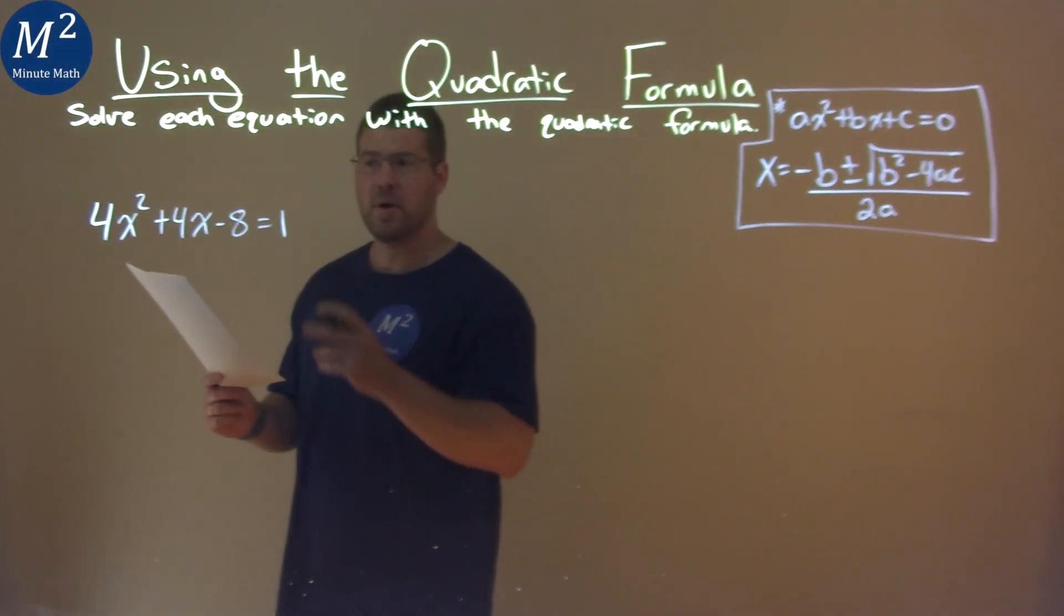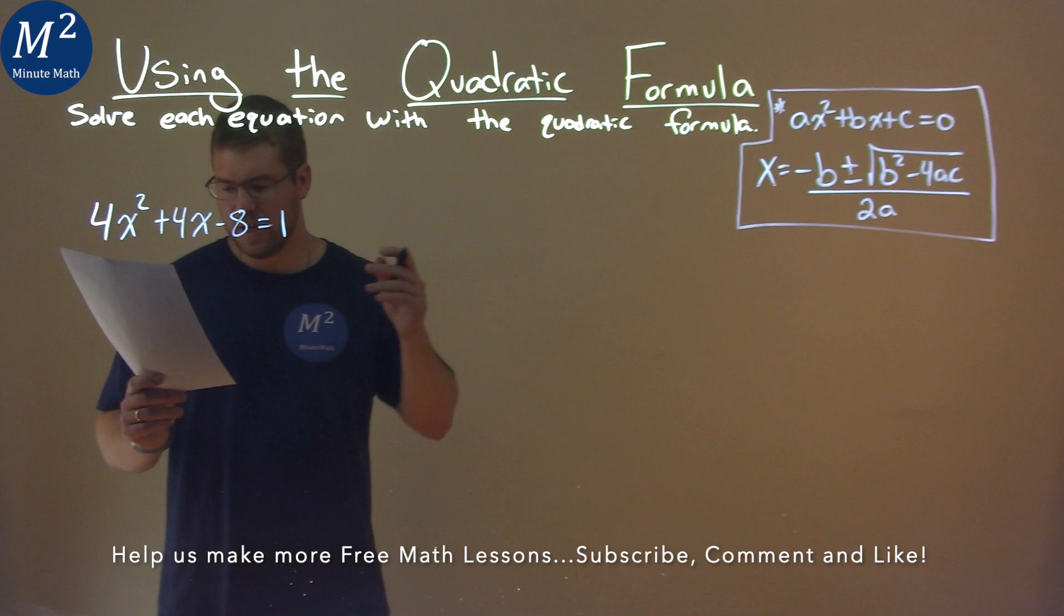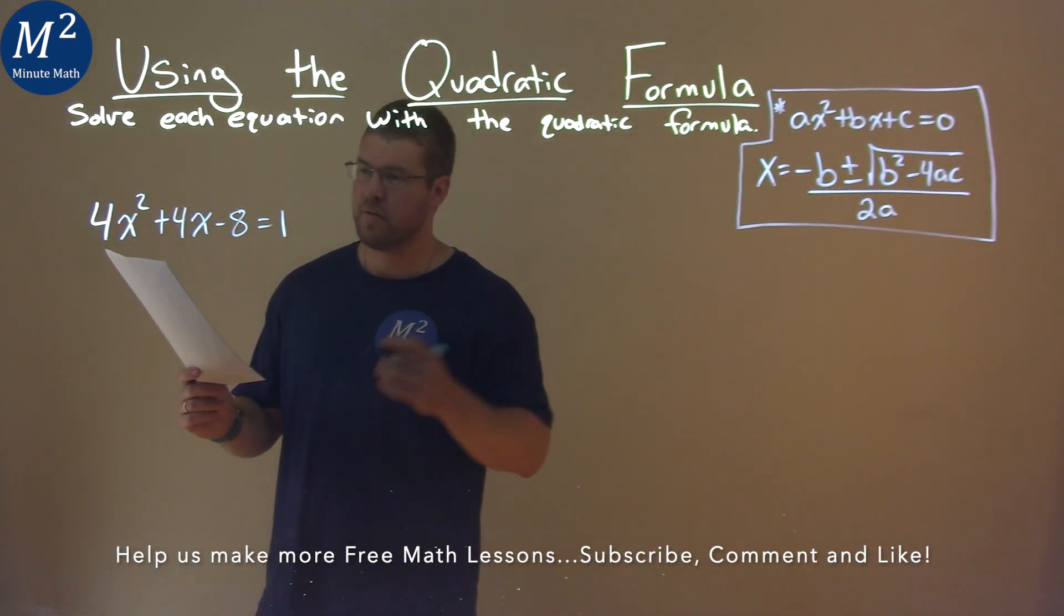We're given this problem right here, 4x squared plus 4x minus 8 equals 1, and we need to solve this using the quadratic formula.